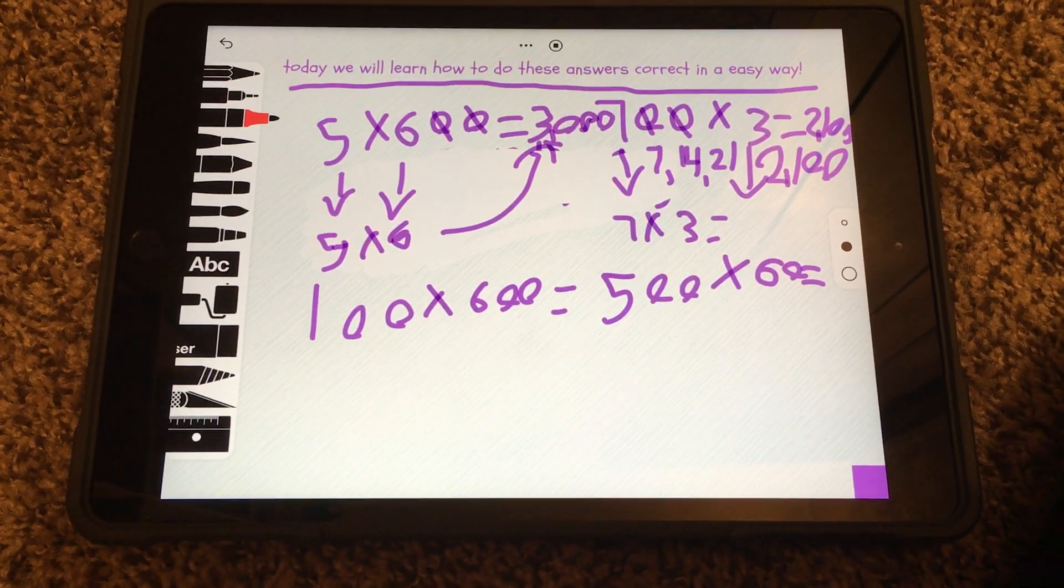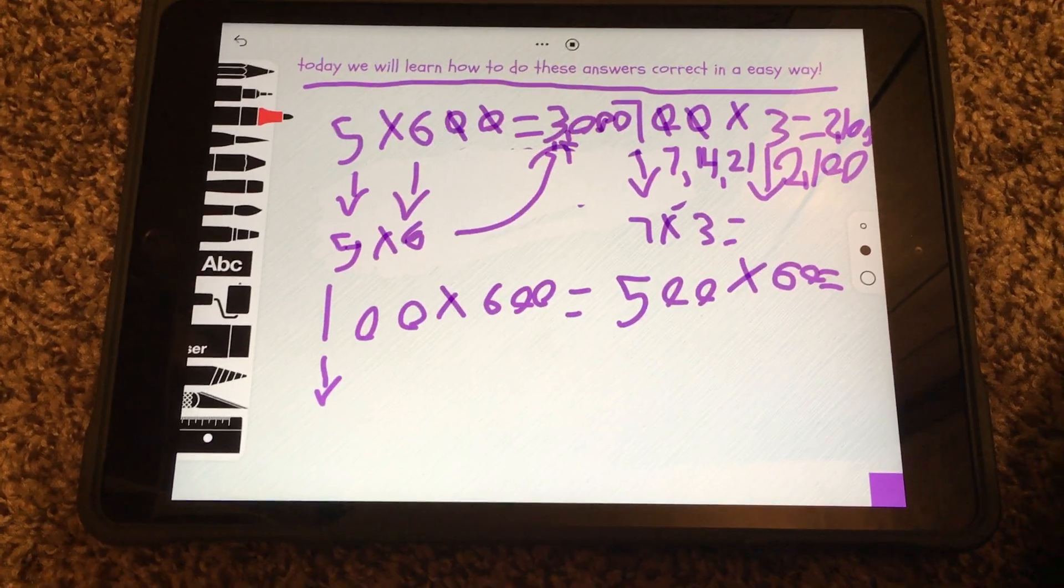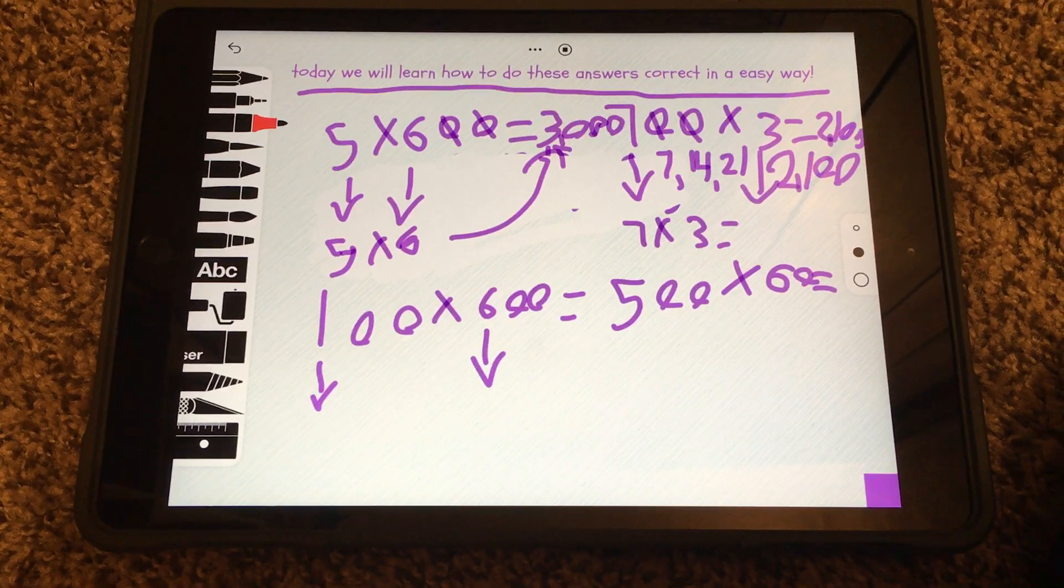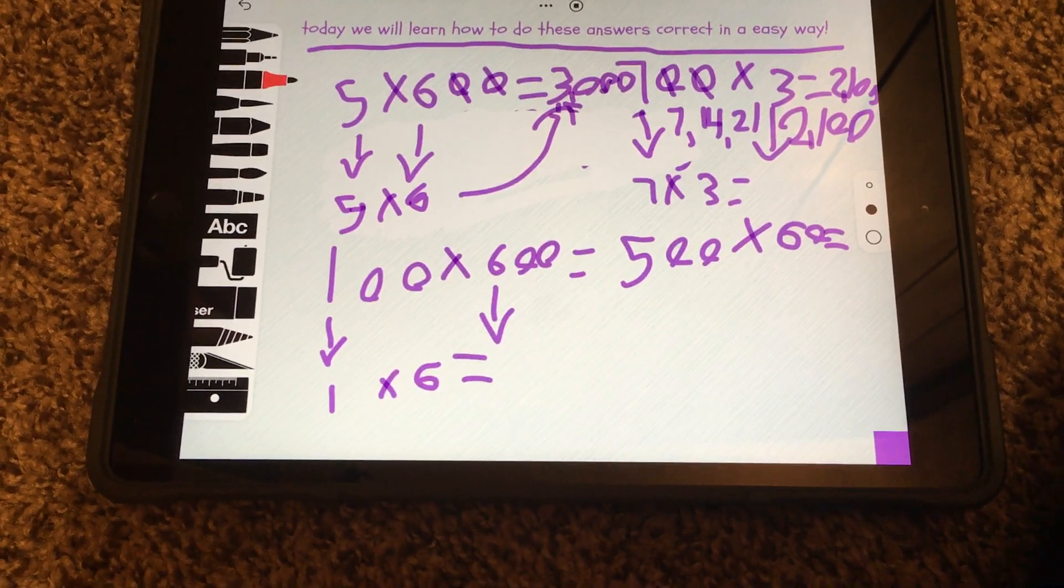And then 100 times 600. Put the 1 down and the 6 down, no zeros. So 1 times 6 equals 6.